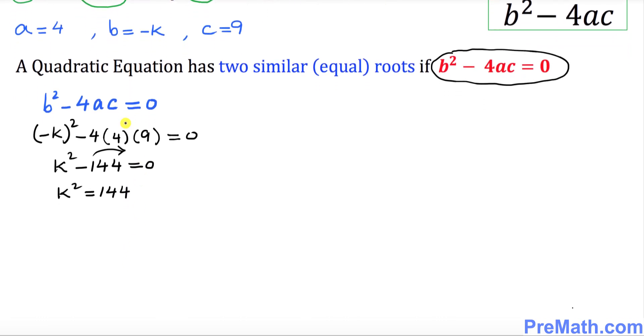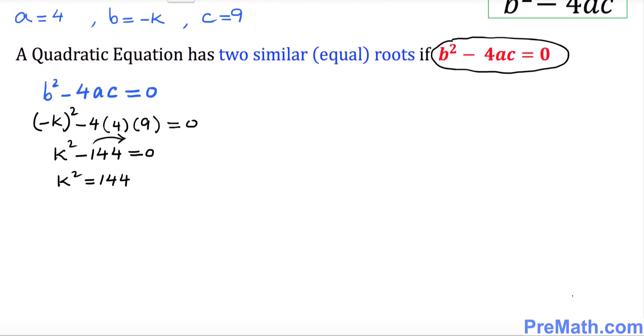The next thing is to get rid of this square. In order to undo this square, you must take the square root on both sides. So this square and square root undo each other. We got k equal to the square root of 144, which is 12, so it's going to become positive or negative 12.